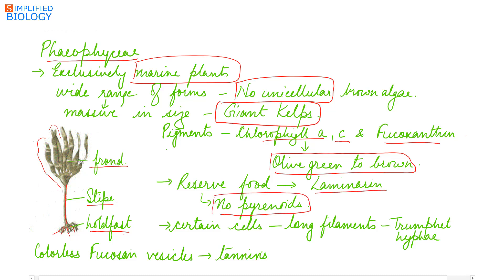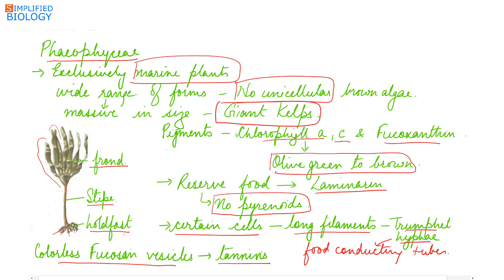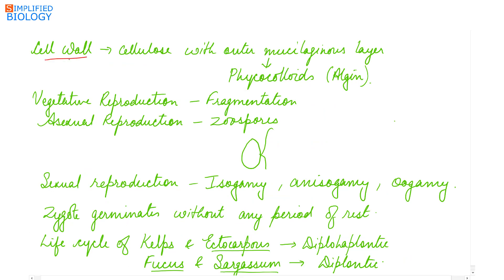Reserved food found in brown algae is laminarin. There are no pyrenoids in brown algae. Certain cells in the thallus get converted into long filaments called trumpet hyphae, which act as food-conducting tubes. The cells possess colorless fucusan vesicles, which contain tannin that prevents the growth of other algae upon them. The cell wall of brown algae is made up of an inner cellulose and outer mucilaginous layer, which contain phycocolloids like algin or alginic acid.